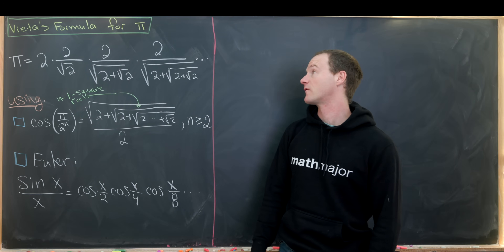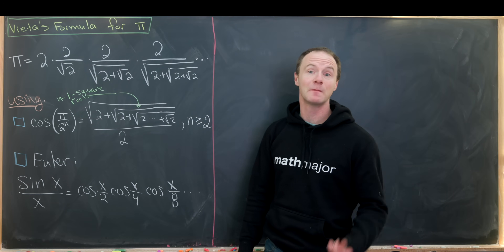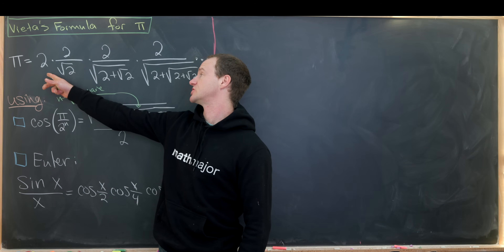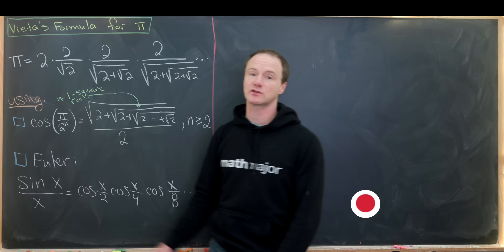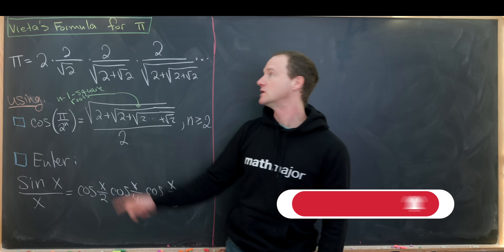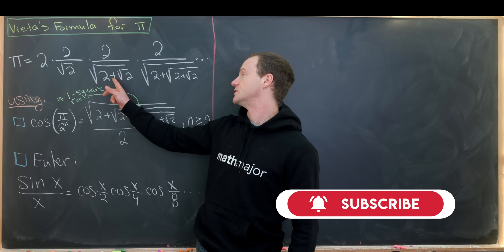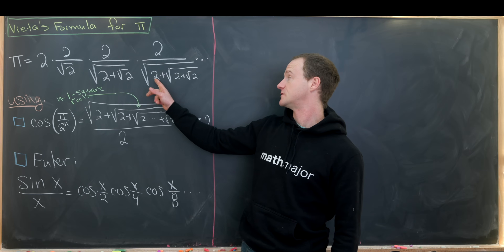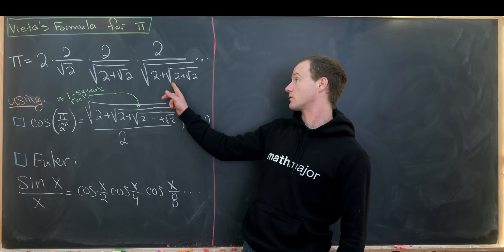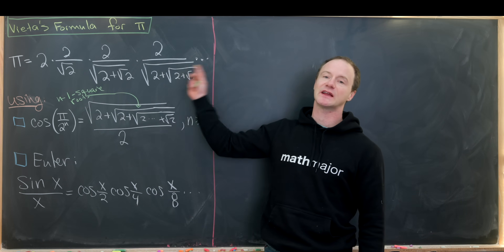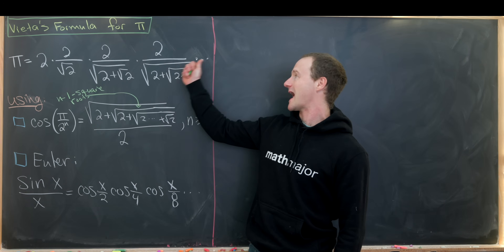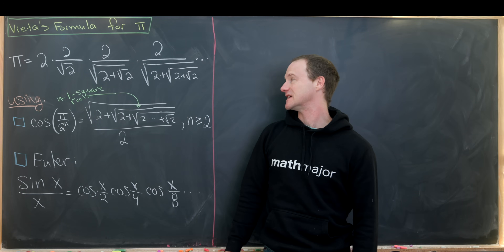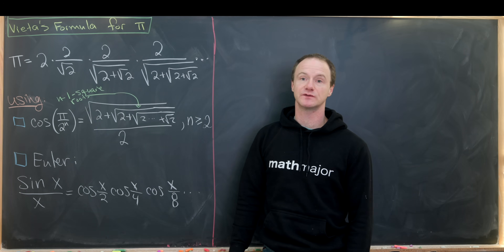Here we're going to look at Viète's famous formula for pi, which says that pi can be expressed as the infinite product 2 times 2 over square root of 2, times 2 over square root of 2 plus square root of 2, times 2 over the square root of 2 plus the square root of 2 plus the square root of 2, and so on. As we move in this direction, we increase the nesting of our square roots of 2.